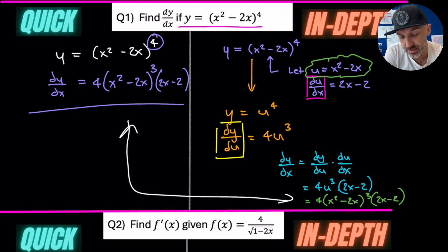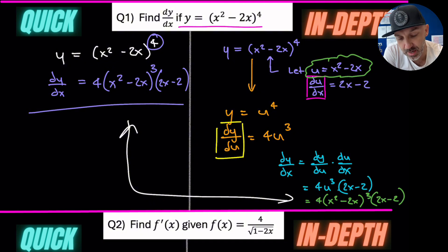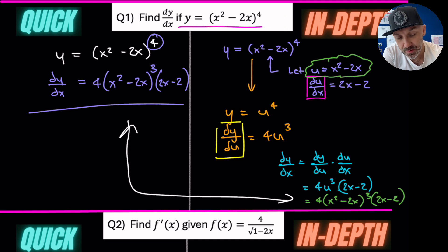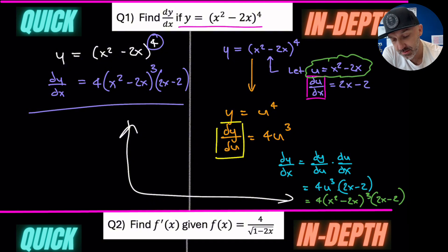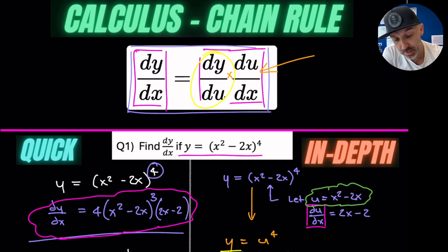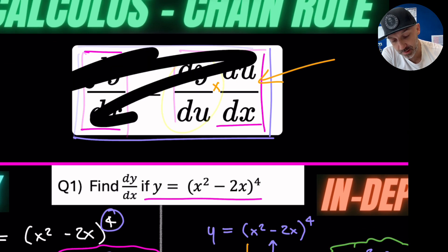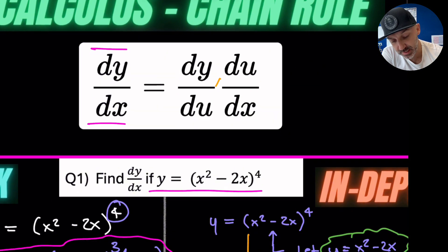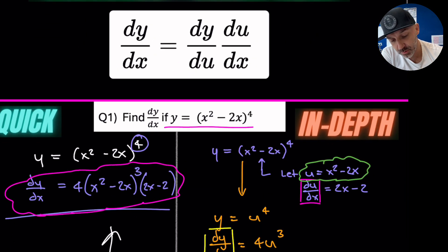You might ask why you would use the longer method instead of the quick one. It depends on the question — sometimes they give you the substitution u and ask you to show the chain rule explicitly, or require you to perform it in the longer method. But on the left-hand side you yield exactly the same result as going through the full chain rule process using the formula.